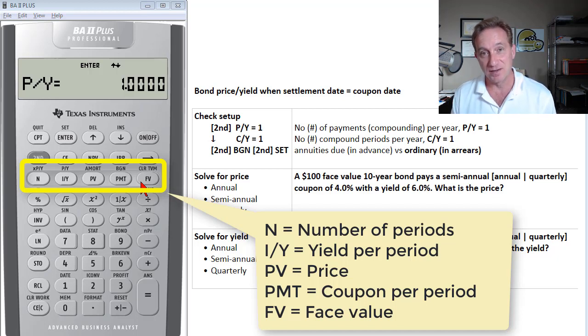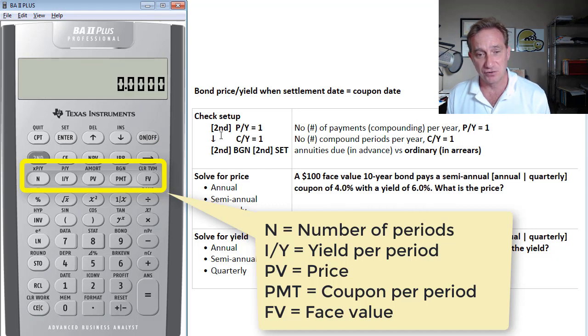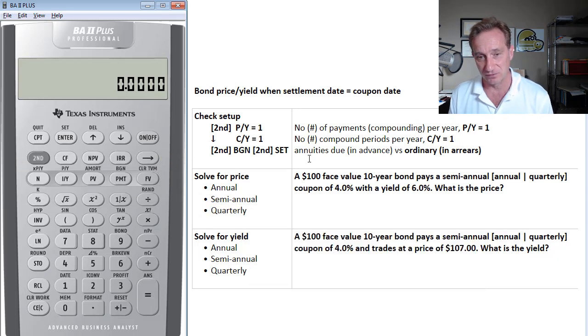However, being on a coupon date, that will happen to coincide with the quoted price or the flat price. There's no difference, but it is a discounted cash flow. So before I look at my examples, I have three sections here. First, just to check the setup, because after all, we don't want to do this and not be confident about what settings we're using.